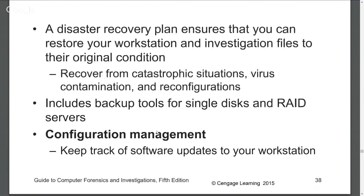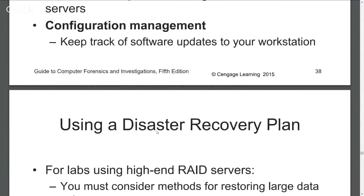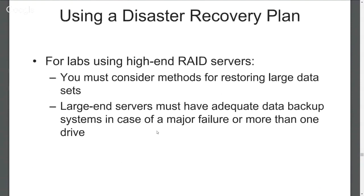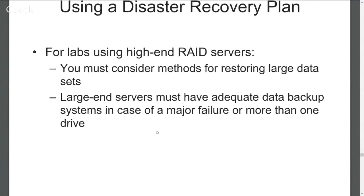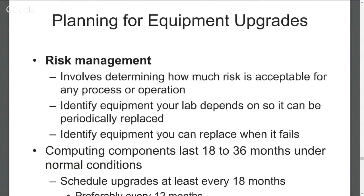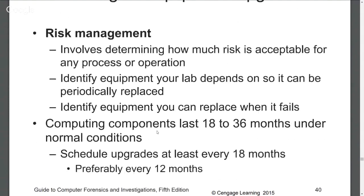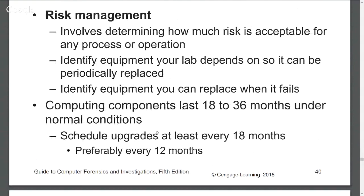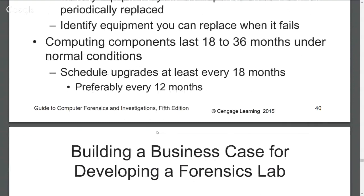Keeping track of updates is another disaster configuration consideration. High-end RAID servers require adequate data backup systems in case of major failure or loss of more than one drive. Risk management determines how much risk is acceptable. Identifying equipment that may need periodic replacement — computing components last about 18 to 36 months, so schedule upgrades at least every 18 months and preferably every 12 months. This also keeps you current with technologies.